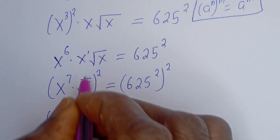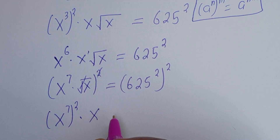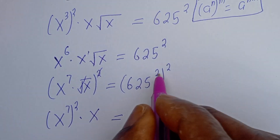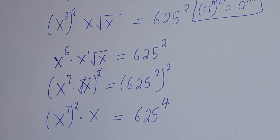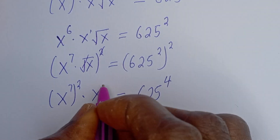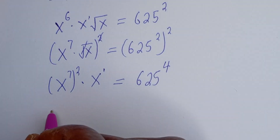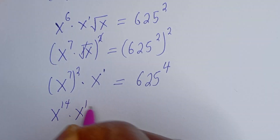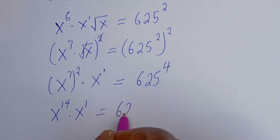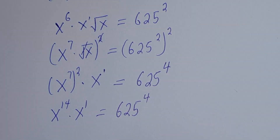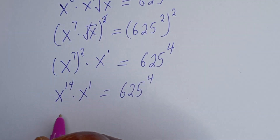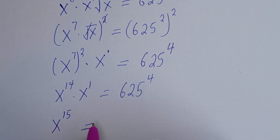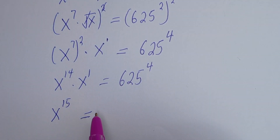This is equal to 625 to the power of 2 times 2, that is 4. Now this is also s to the power of 1. We have s to the power of 7 times 2, which is 14, multiplied by s to the power of 1, is equal to 625 to the power of 4. Then this is s to the power of 15 is equal to 625.